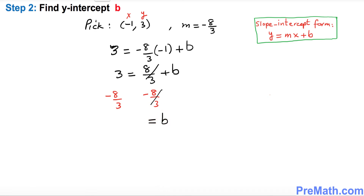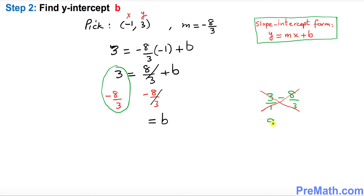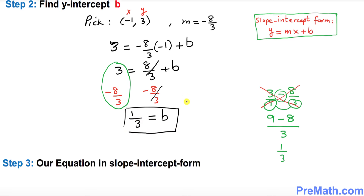So b equals 3 minus 8/3. Write 3 as 3 over 1, then use the crisscross method: 3 times 3 is 9, and 8 times 1 is 8. The denominator is 1 times 3 equals 3. So we get 9 minus 8 over 3, which simplifies to 1 over 3. Our b turns out to be 1/3.